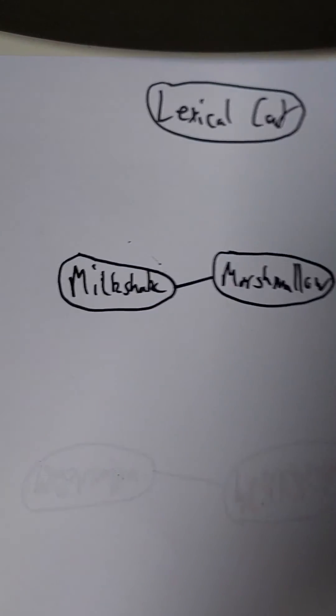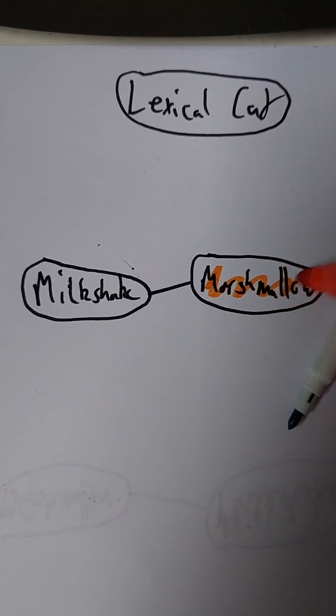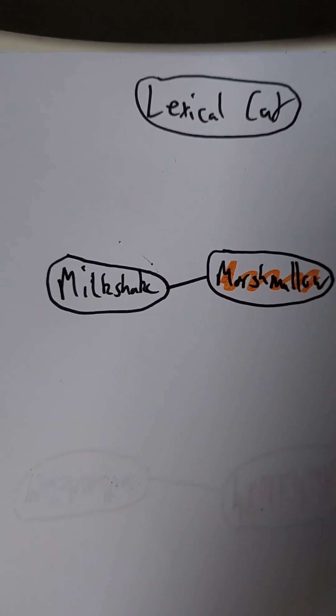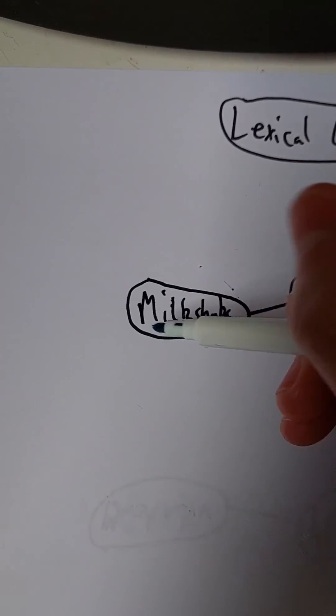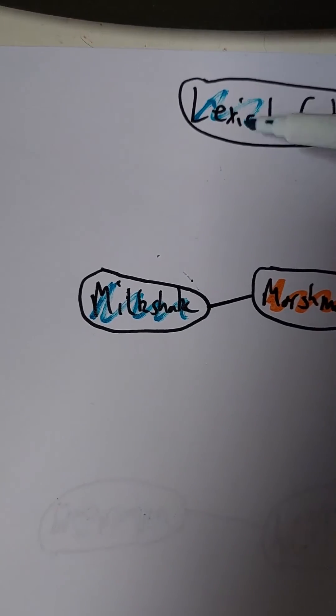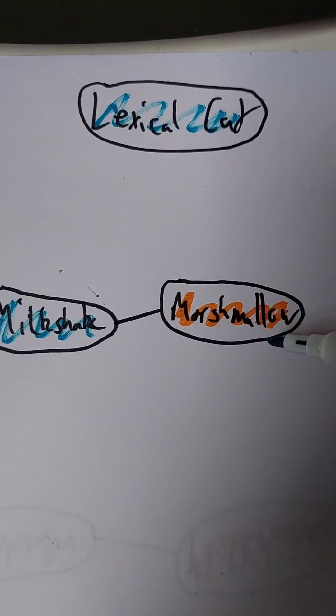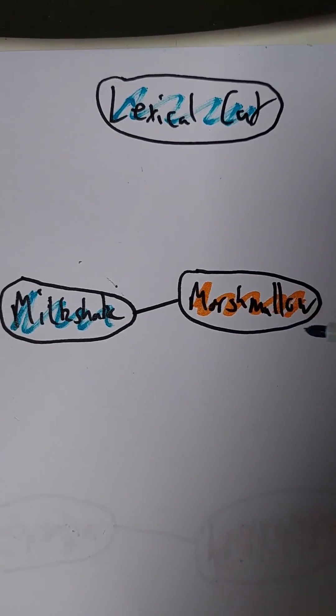We then give each register its own colour and colour the graph such that no nodes joined together have the same colour. In this case lexical cat and milkshake go in the same register, and marshmallow gets its own.